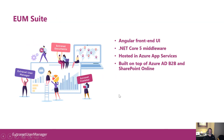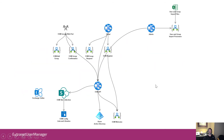Switching gears to our commercial products: this is our Extranet User Manager suite, all about building an external digital community. What I want to focus on is how it's built. We've got an Angular front-end UI, .NET Core 5 middleware, and we host all the various elements in Azure App Services. It's built on top of Azure Active Directory B2B and SharePoint Online. The solution architecture has a number of different app services running: for the end-user portal, the admin Angular application, and the API that's talking to Azure Active Directory and SharePoint. We've also got lots of different Logic Apps doing different things.